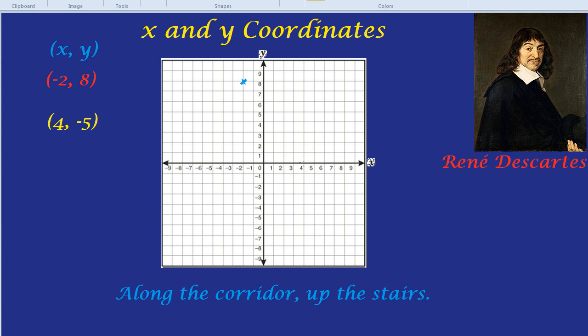Now what did that guy say about going up the stairs? Oh yeah, that's it. So the second number is how far you go up or down the stairs. Now it's -5. So we don't go up to 5, we go down to -5. So right there is the coordinate (4, -5).